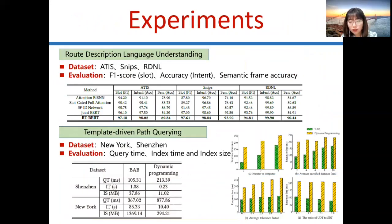For route description language understanding, we use datasets ATIS, SNIPS, and RDNL to evaluate RT-BERT on F1 score, intent accuracy, and semantic frame accuracy. For template-driven path query, we compare performance of BAB algorithm and dynamic programming algorithm on query time, index time, and index size with Shenzhen and New York datasets. It is easy to see that the performance of our proposed module and algorithm are better than other baselines.